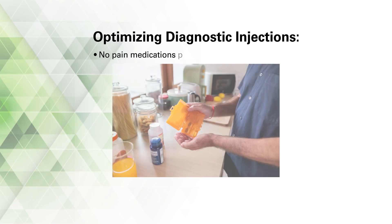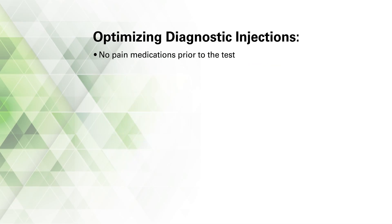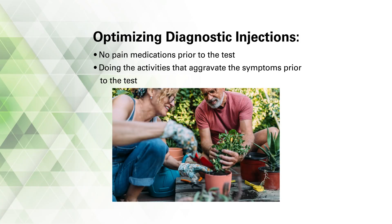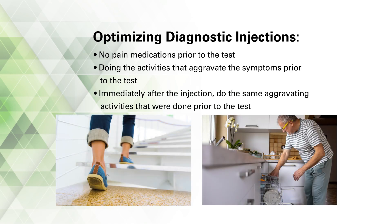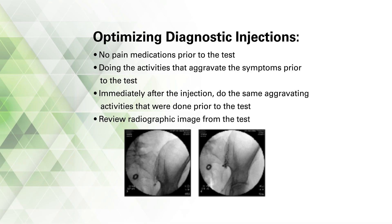Even with this high degree of confidence, we still send patients for a diagnostic injection. The intra-articular diagnostic injection is considered the reference standard for confirming SI joint pathology, and patients typically require at least one but usually two positive diagnostic blocks before a treatment recommendation is made. Lessons learned to optimize the injection include: no pain medications the day of the injection; patients should do aggravating activities beforehand — often the car ride is enough; immediately after injection they should repeat those activities to see if the local anesthetic relieves the pain. I also want to see a radiographic image confirming needle placement and contrast tracking within the SI joint, not extravasation. If I'm not satisfied with the injection, I have a low threshold for ordering a CT-guided injection to confirm with 100 percent certainty that the needle is within the joint.